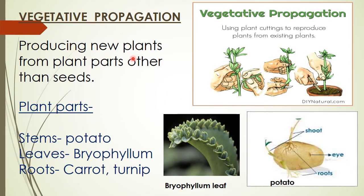Vegetative propagation is the production of new plants from plant parts other than seeds. Instead of using seeds, we can use other plant parts such as stem, leaves, and roots. Plants such as potato and ginger grow from underground stems. Potato has buds called eyes, and each eye is capable of growing into a new plant. Plants such as carrot, sweet potato, and turnip can grow into new plants from their roots. The leaves of certain plants such as bryophyllum produce buds on their margins which grow into new plants when placed in moist soil.